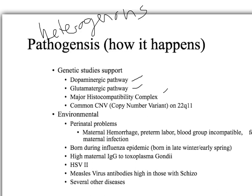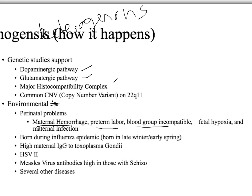There is also environmental evidence for schizophrenia. Whenever a mother has problems during birth and labor — such as maternal hemorrhaging, preterm labor, blood incompatibilities, fetal hypoxia, or infections — there is a strong association with schizophrenia. For example, when my little brother was born he had aspirated his meconium and was hospitalized for a couple of days. That may be a contributing factor, as it is associated with schizophrenia.